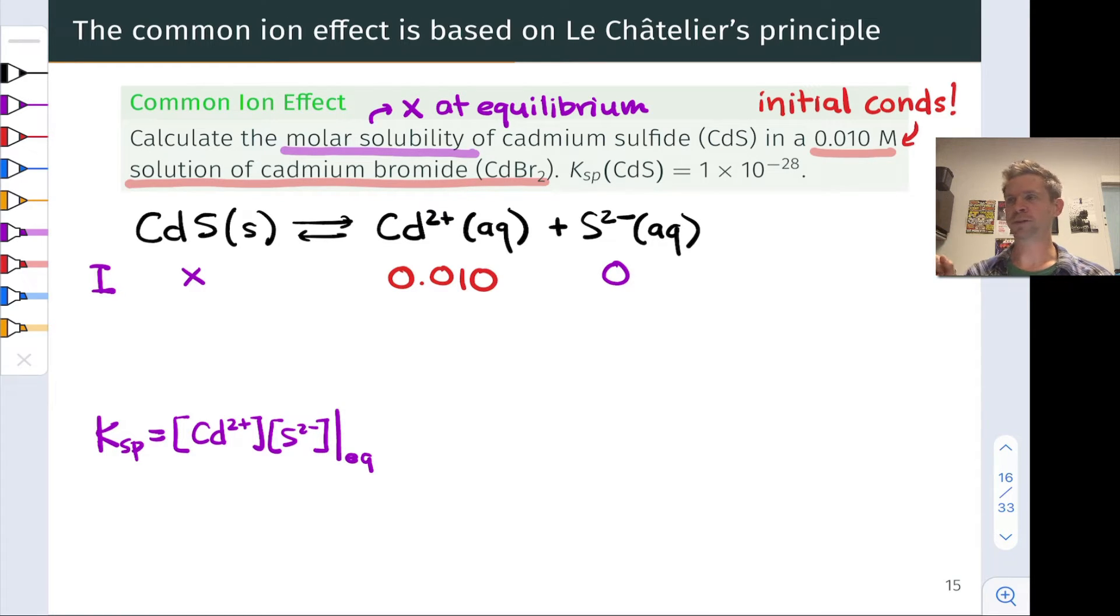At this point, I encourage you to pause, and in a throwback to our discussion of ICE tables, compare Q to K. Think about Qsp at this point.